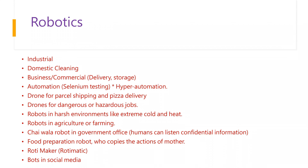Here in the US, many people use a machine called Rotimatic — it looks like a printer. You pour flour, water, and oil, it mixes, makes a roti, bakes the roti, and gives it to you. You can decide what kind of roti you want. Food preparation robots can copy your mom's cooking — what ingredients she uses and when she adds them — and the robot will replicate it from tomorrow on.